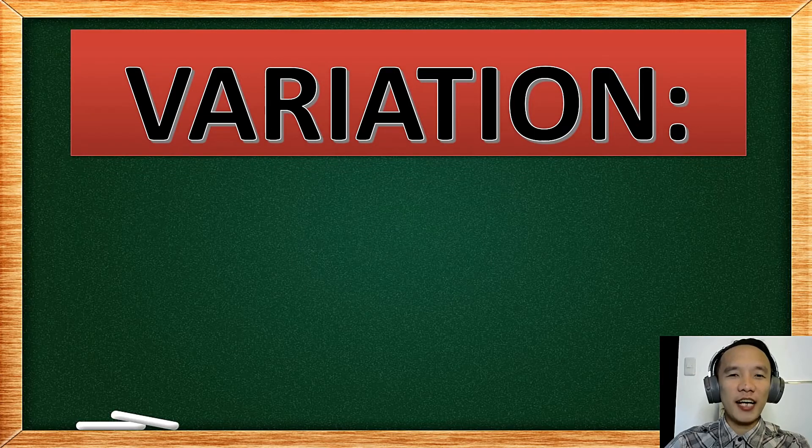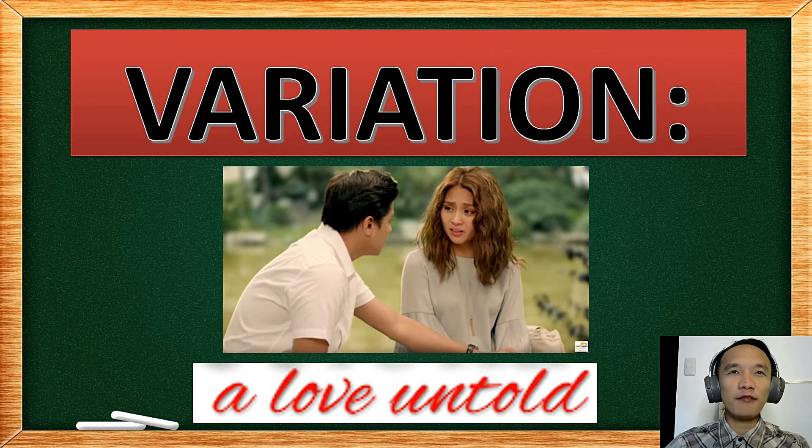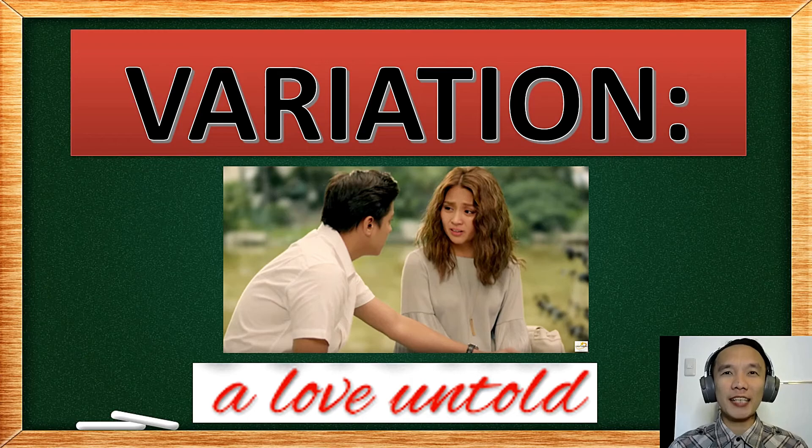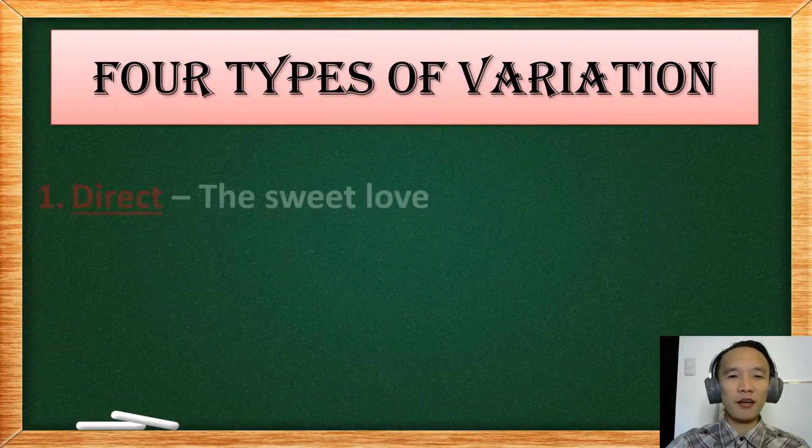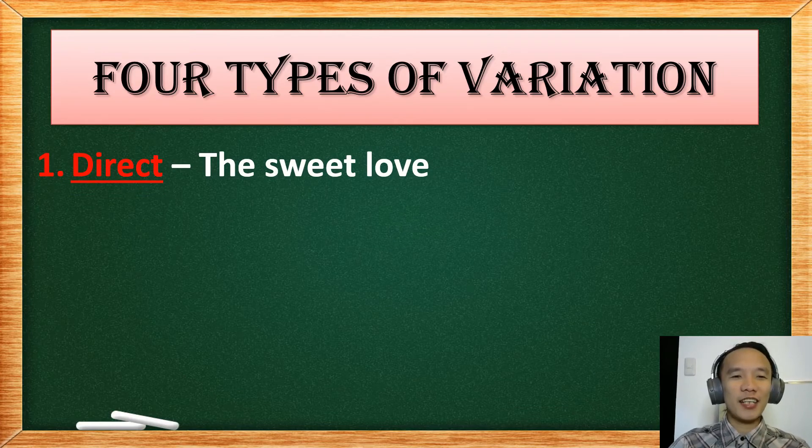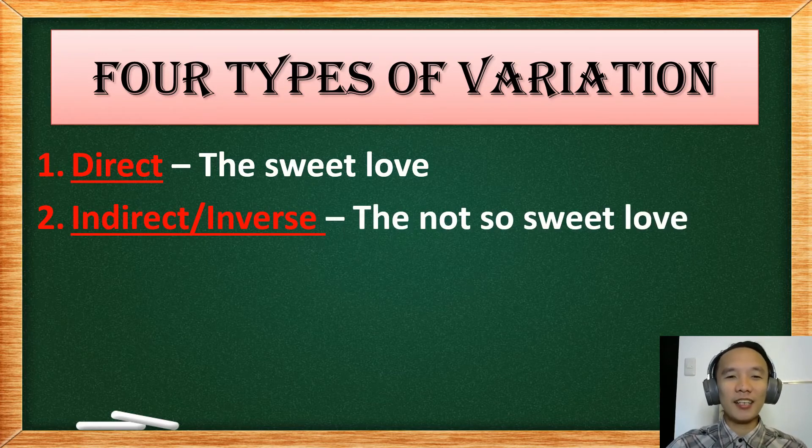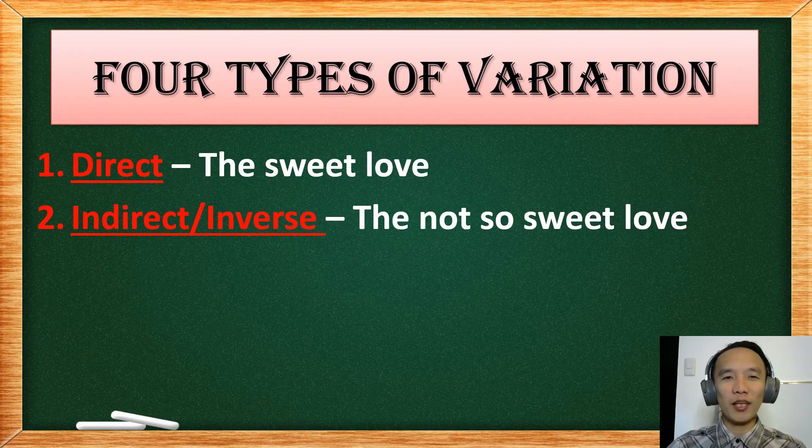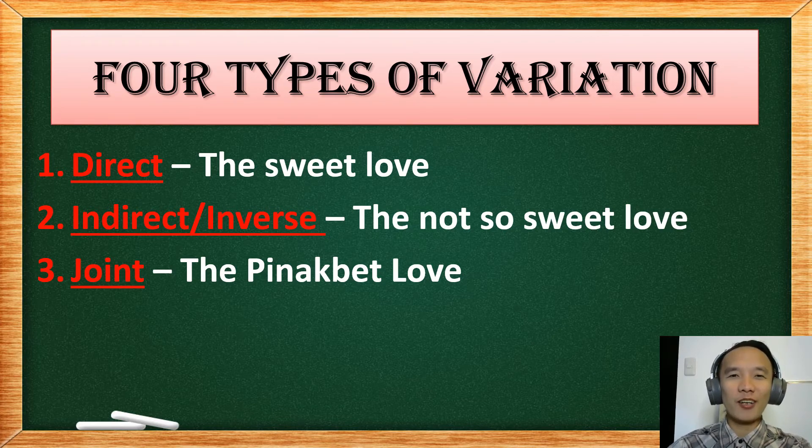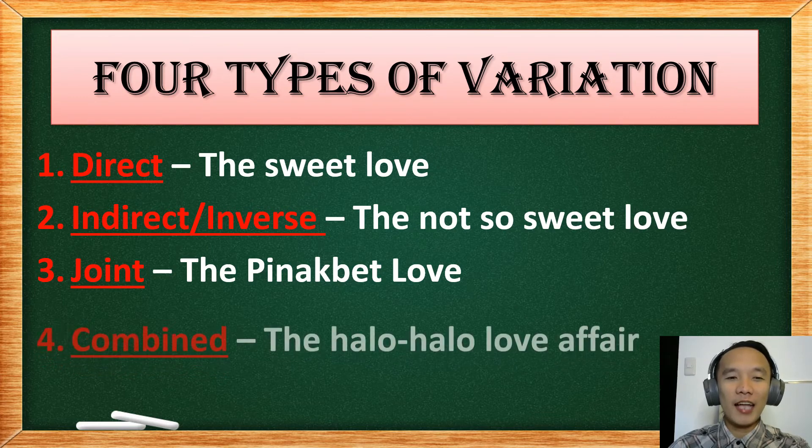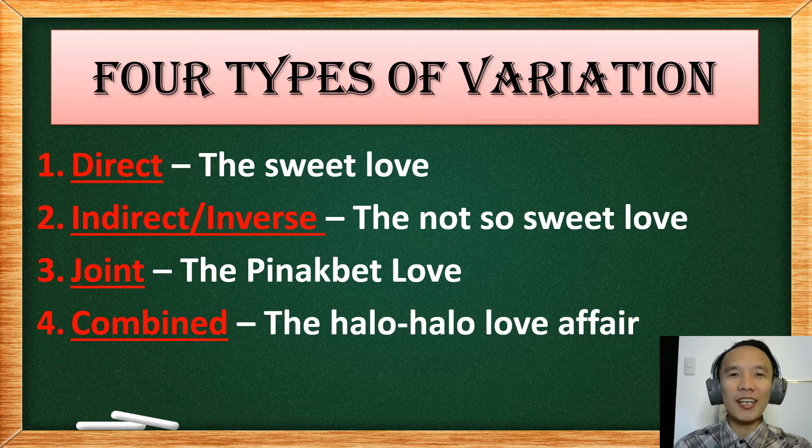So here we are going to discuss variation and it's a love untold. I will be discussing the four types of variation and I will relate it into a love story. Here is the four types of variation. First is the direct variation or what we call the sweet love. The second one is indirect or inverse variation and this is the not so sweet love. The third variation is what we call joint variation or the pinakbet love. And lastly, the combined variation or as I call it, the halo-halo love affair.